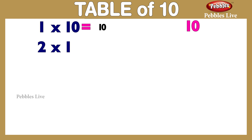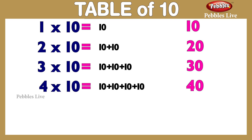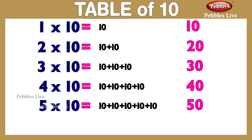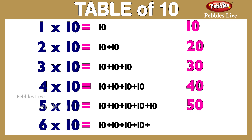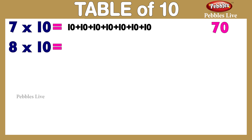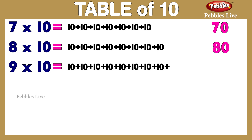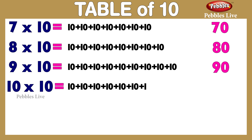Table of 10: 2 tens are 20, 3 tens are 30, 4 tens are 40, 5 tens are 50, 6 tens are 60, 7 tens are 70, 8 tens are 80, 9 tens are 90, 10 tens are 100.